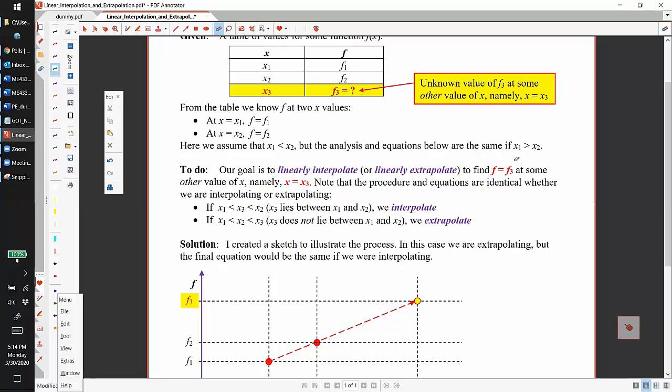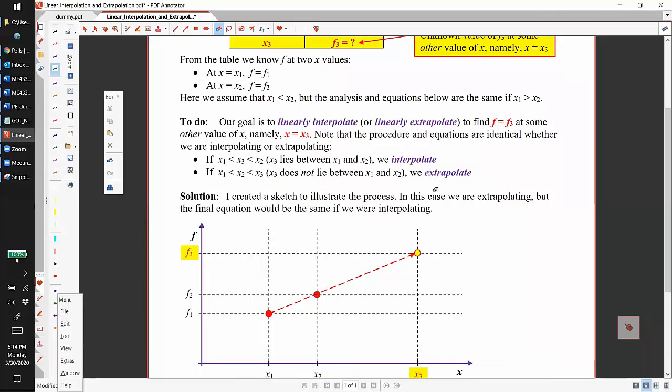Just a quick difference between interpolating and extrapolating: if x3 lies between the two knowns x1 and x2, that's called interpolating. If x3 is outside the range of x1 and x2, we extrapolate.